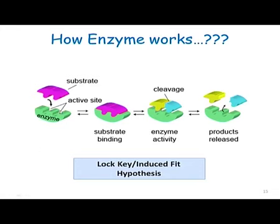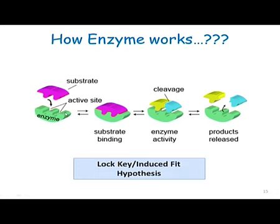What enzymes do is shown in a diagram: an enzyme has ridges or grooves called active sites. Substrates to be acted upon come and sit in the active site. Based upon how they fit, there are two theories. The outdated lock-key hypothesis says the enzyme's active site is rigid like a lock, and the substrate is like a key — both are complementary but do not change.